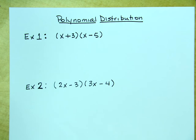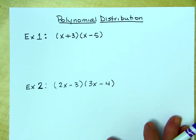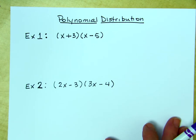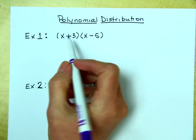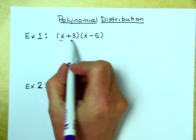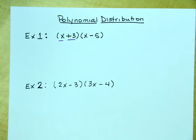So let's look at two more examples. The first example we will look at is x plus 3 times x minus 5. Just like in the handout that you're going to get, we're going to take the first binomial and split it up into its two parts.